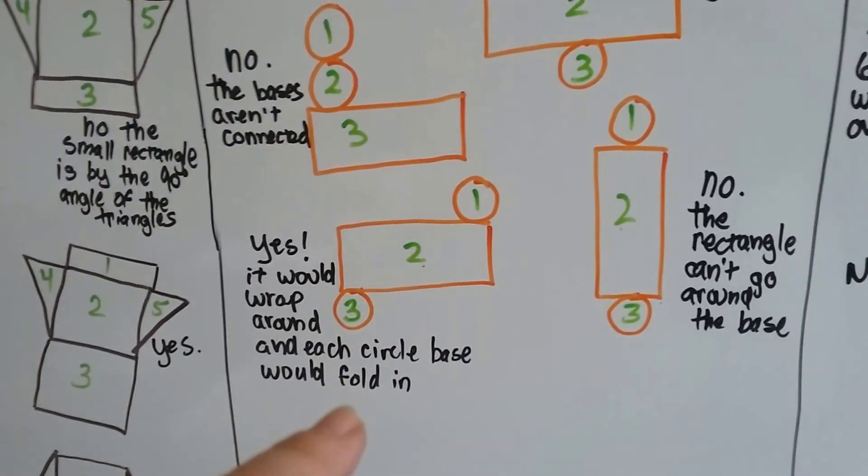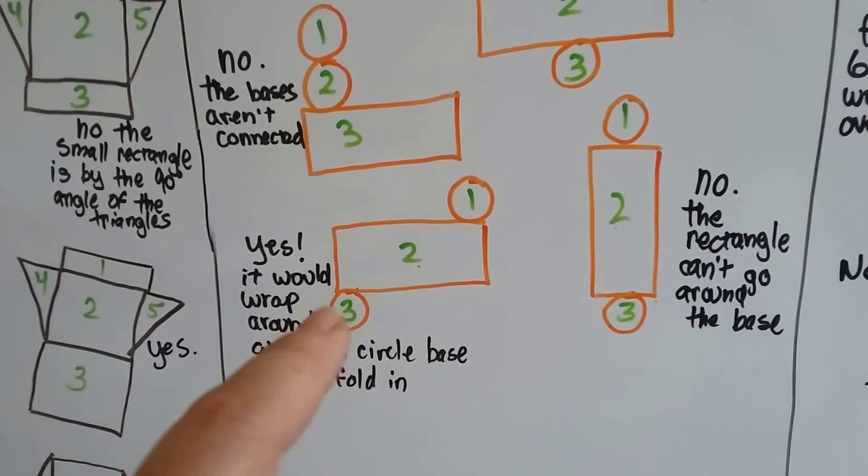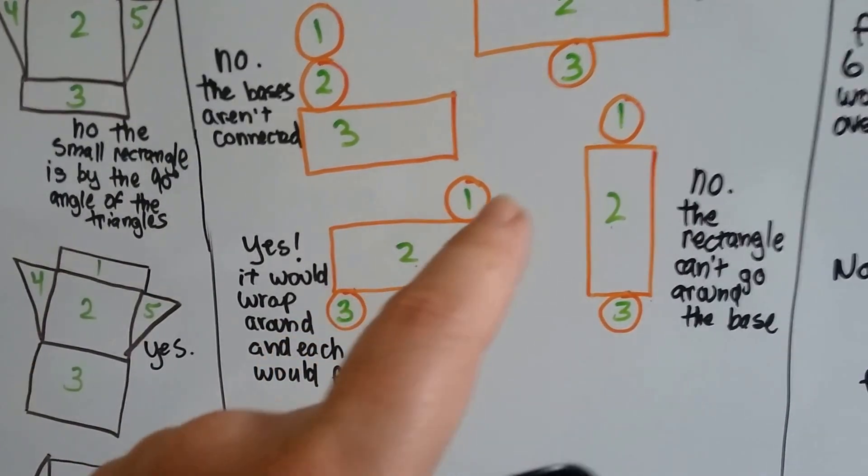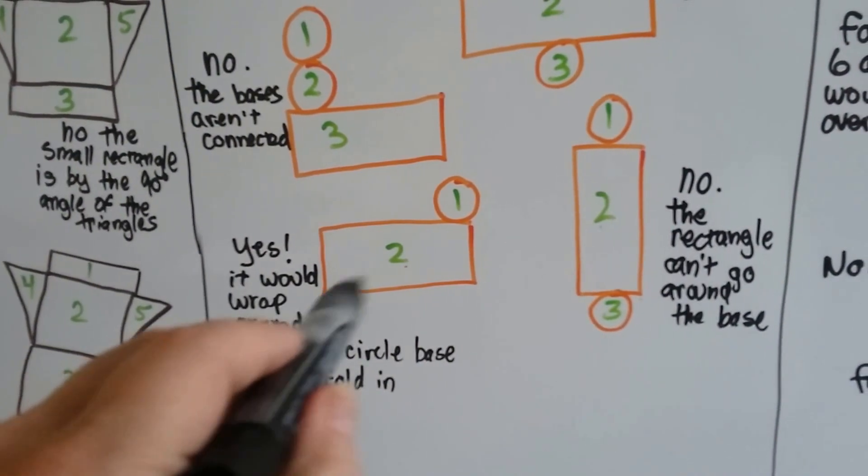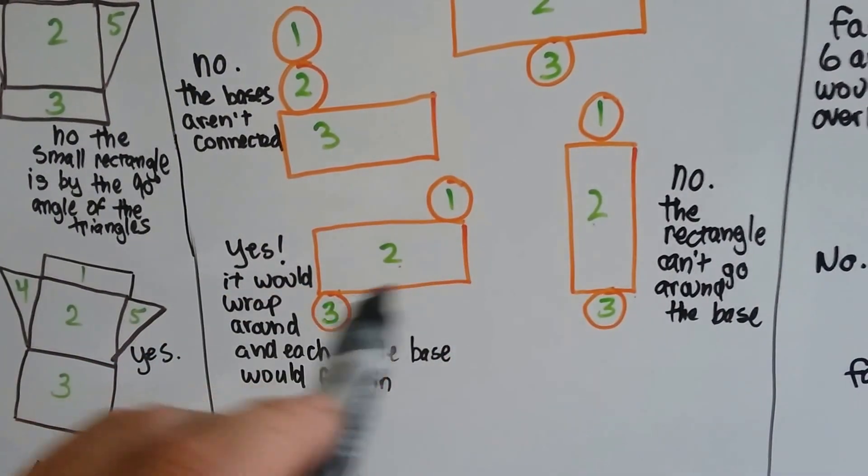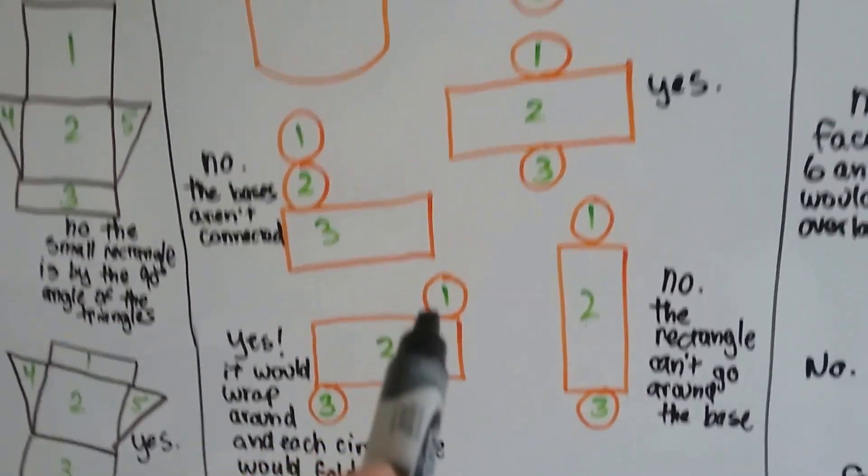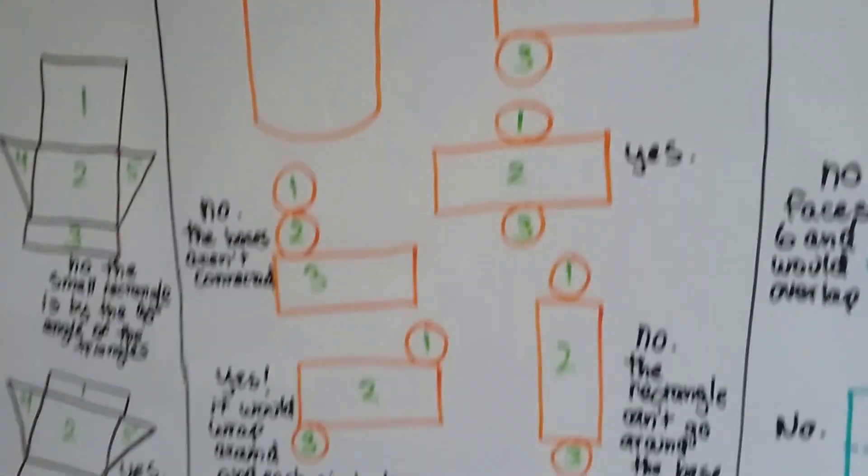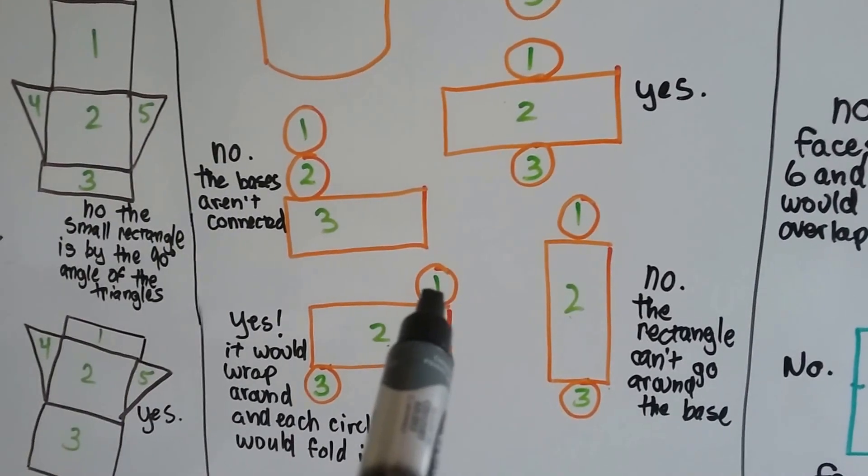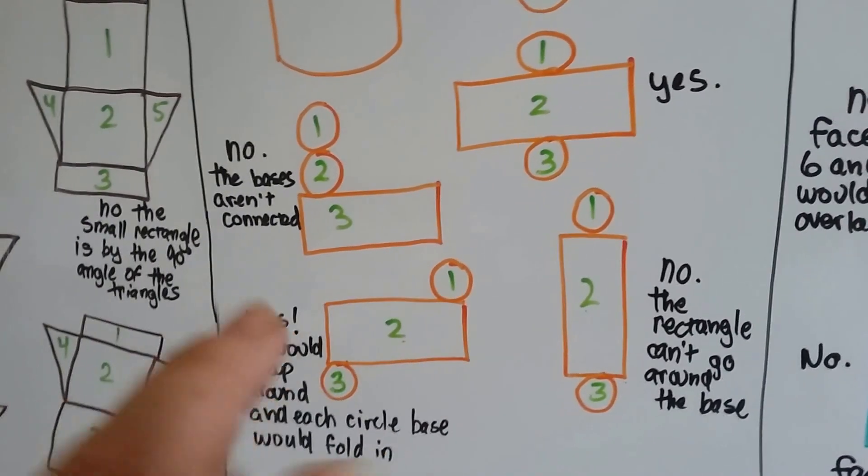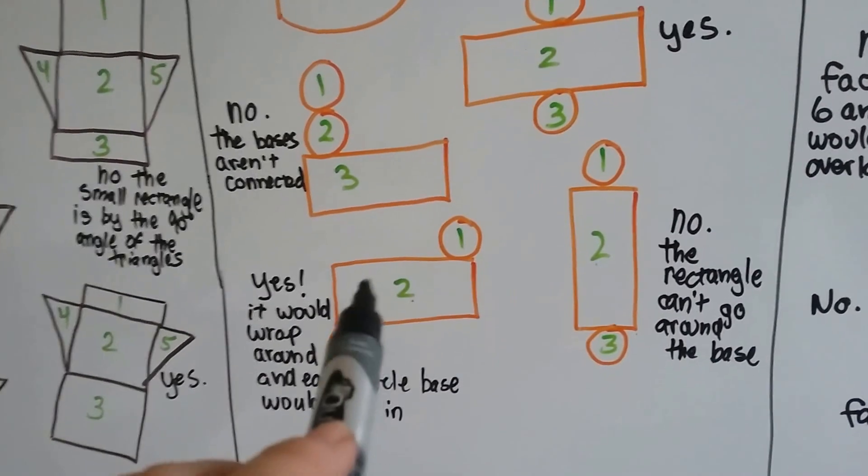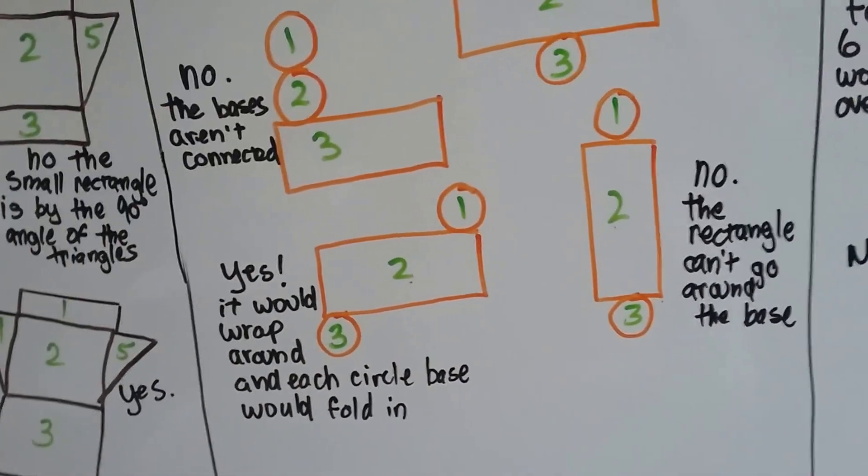This one would work, as long as number one and number three are way on the edge. As long as they're way on the corners like this, it would work. Because when you wrapped this one around, it would end up being like this. This number one would be right above this one when it ended up getting completely wrapped around. So yes, this would work. Isn't that crazy?